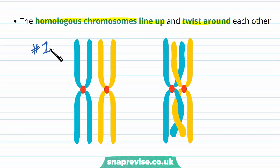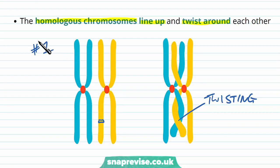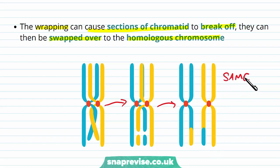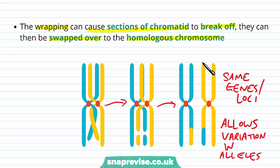For pair number 1 out of 23, the replicated copy from dad and the replicated copy from mum twist around each other, bringing genes at the same locations close together. Because they are all part of the same pair, the gene found at a given site codes for the same proteins across all four copies — the only thing that might be different is the alleles. They are brought into close proximity so they can be swapped. The twisting causes sections of the chromatid to break off and get swapped over to the other homologous chromosome. The result is that they still all code for the same genes at the same places, but with different alleles exchanged — and this is really important for creating variation in offspring.